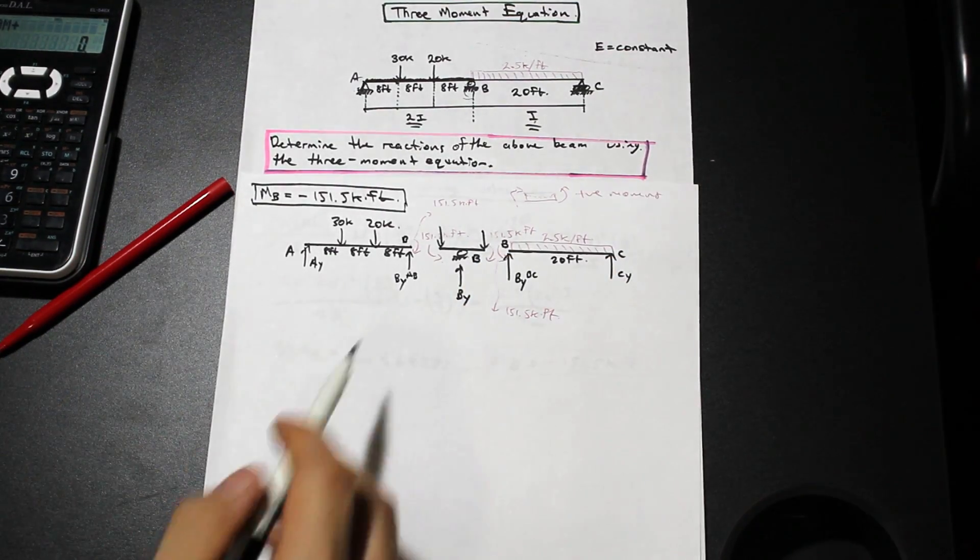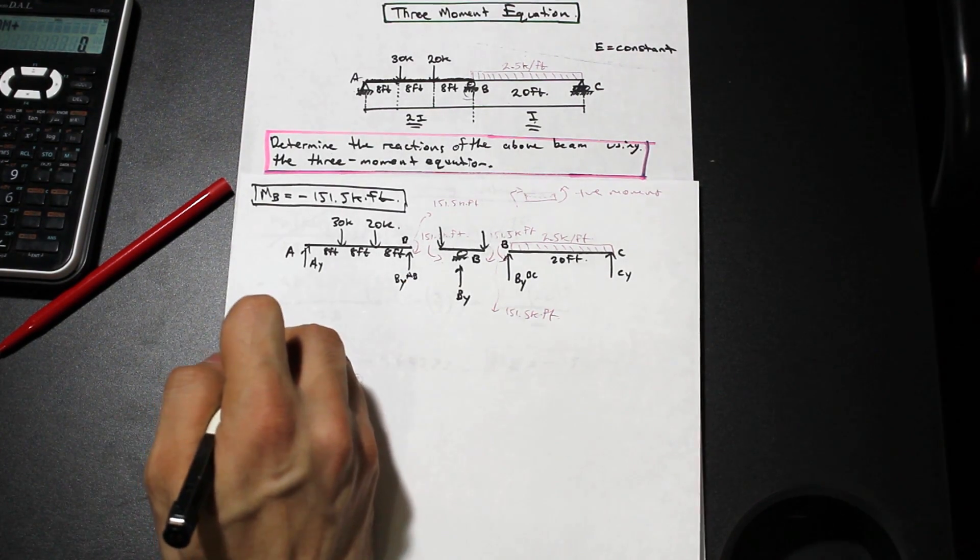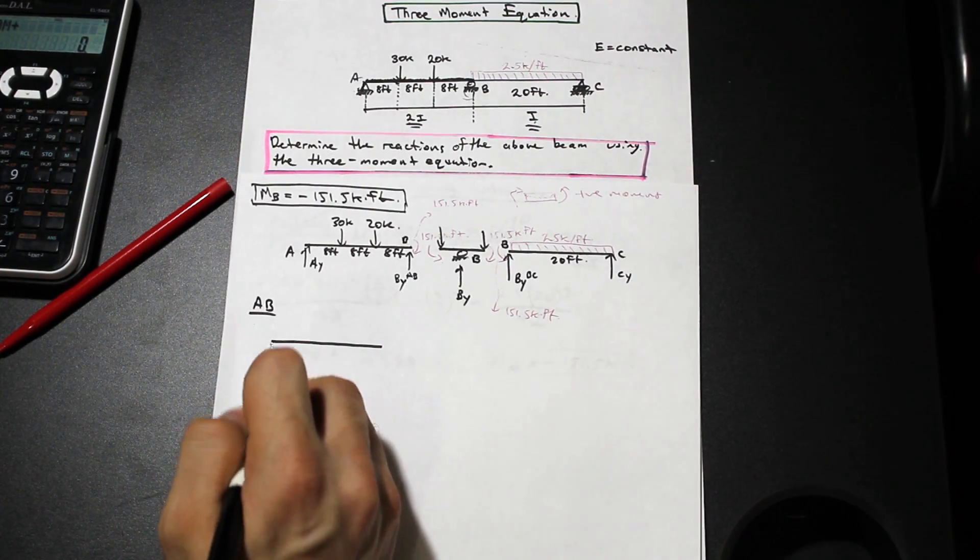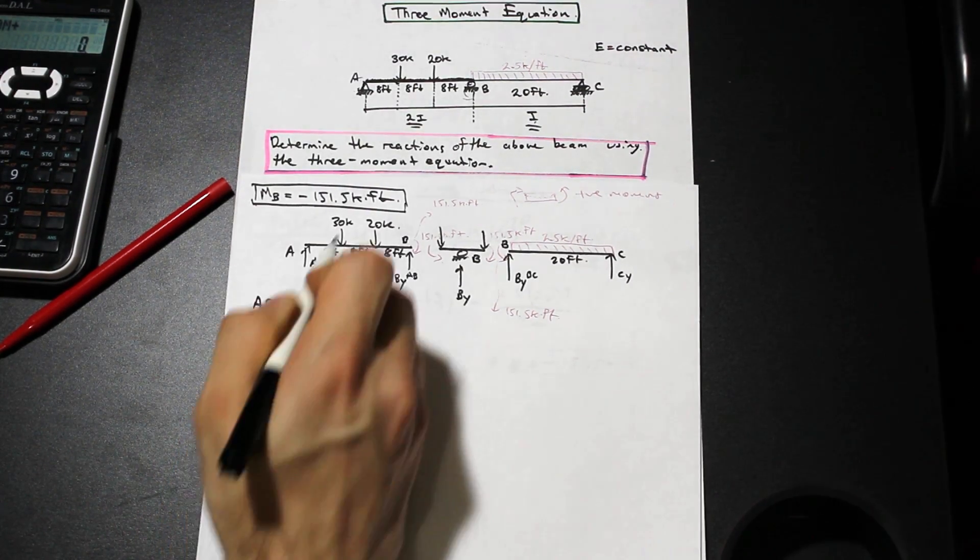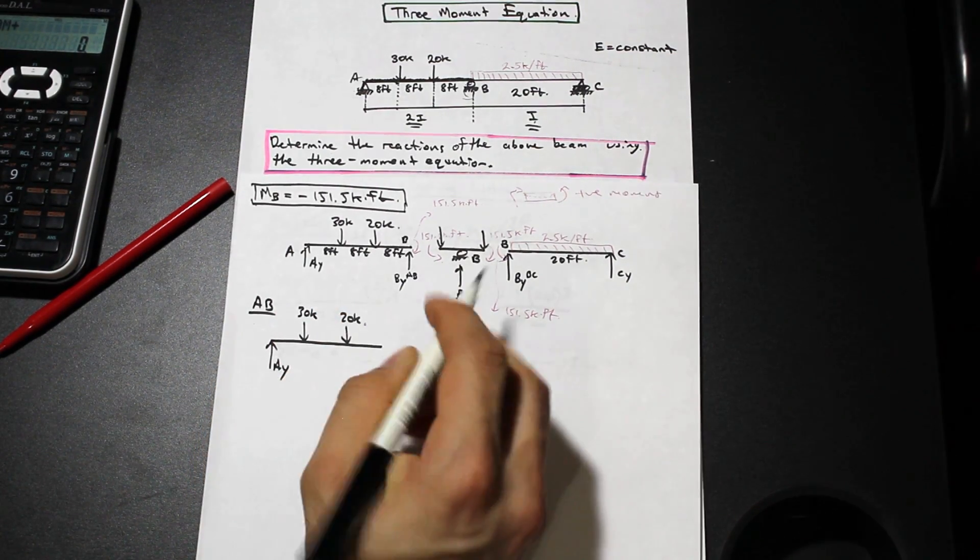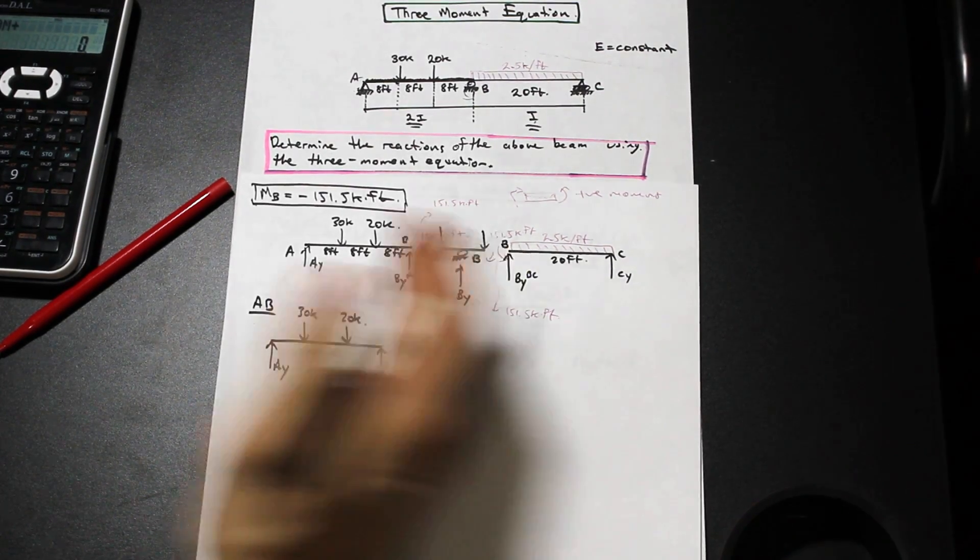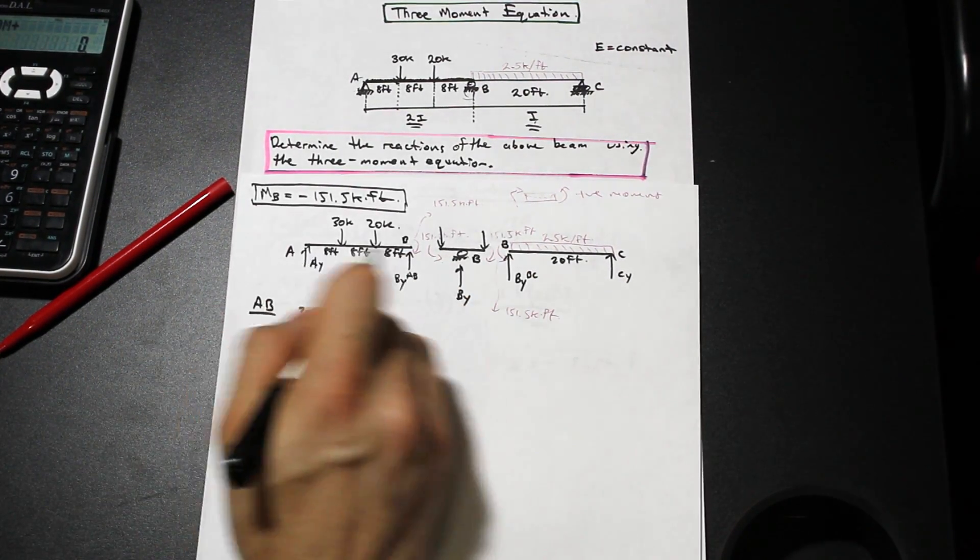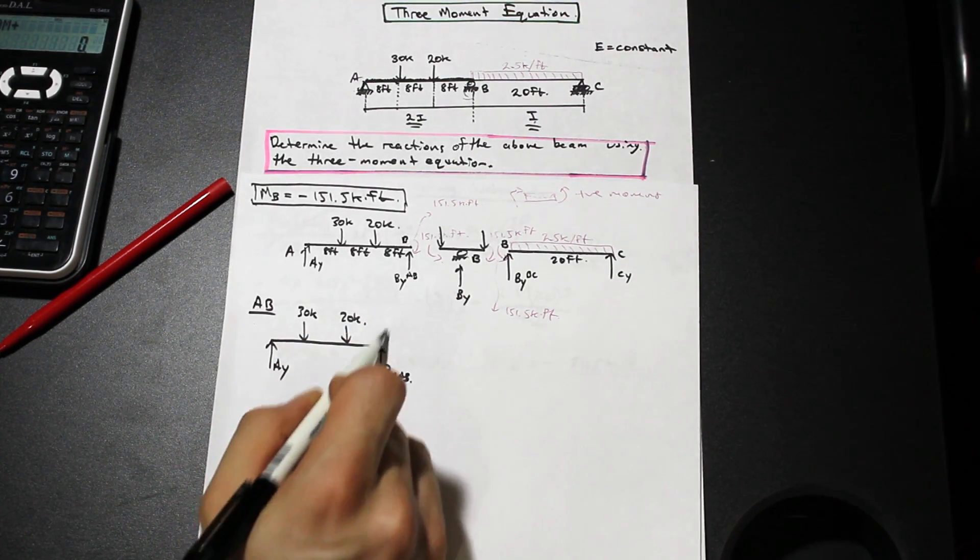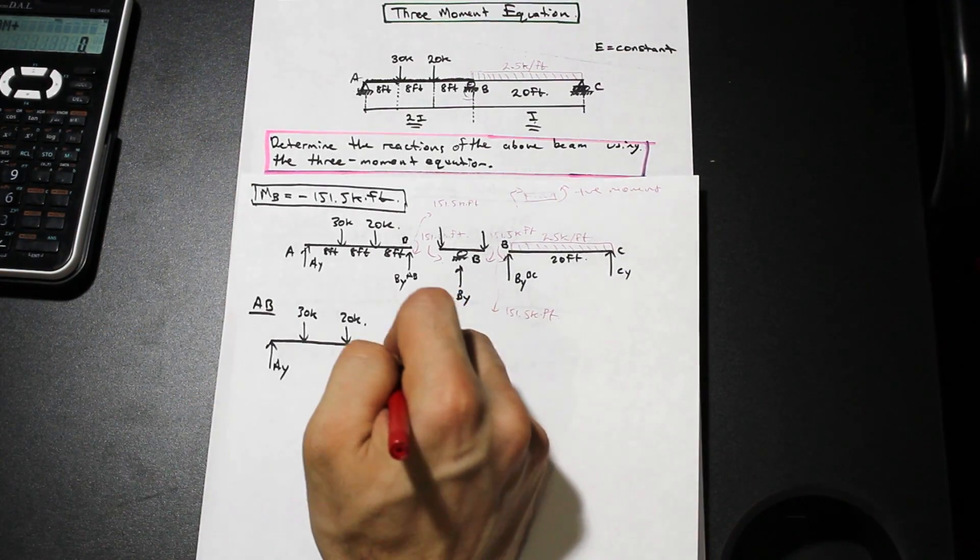Now we have this section AB here and I'm going to draw it out again down here. So we have AY, we have 30 kip, 20 kip, and we have this unknown so we'll call it BY to the left or BY of the section AB. We have this unknown force here that where we cut the beam but we do know that the moment is 151.5 kip feet.